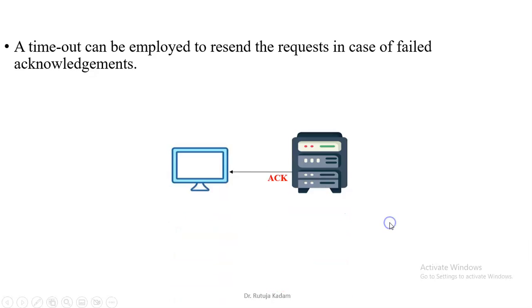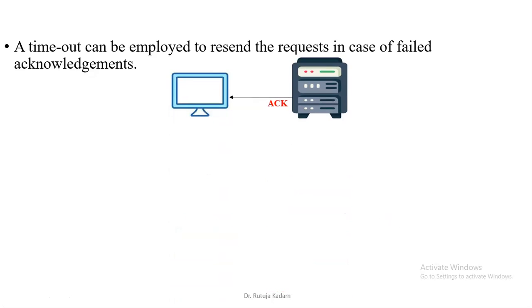Now a timeout mechanism is deployed to resend the requests in case of failed acknowledgements. Let's say the acknowledgement message that the central server sends after updating the data fails. A timeout mechanism is a time interval of some seconds. Let's say, consider five seconds has been kept. Within these five seconds, if the response or acknowledgement from the central server does not reach the client, the client understands that there is some error in the transmission, so therefore it resends the request.